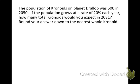Okay, here's our first word problem. The population of chronoids on planet Drollop was 500 in 2050. If the population grows at a rate of 20% each year, how many total chronoids would you expect in 2081? Round your answer down to the nearest whole chronoid. Okay, so this is a growth problem. So we're going to be using this equation.